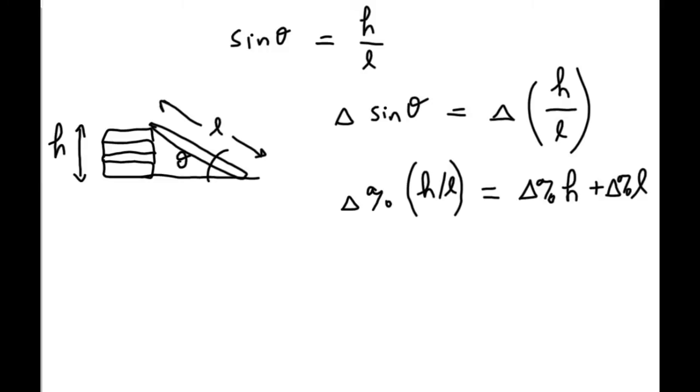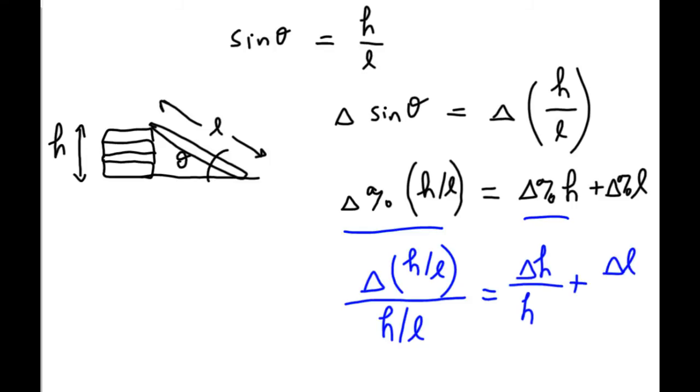Now, any percent uncertainty, percent uncertainty in something B is simply equal to the absolute uncertainty in B, the absolute uncertainty, divided by B itself. So, that means this percentage uncertainty is the absolute uncertainty, divided by the value itself. And this percentage uncertainty is equal to the absolute uncertainty, divided by the value. Likewise, this is the absolute uncertainty, divided by the value.